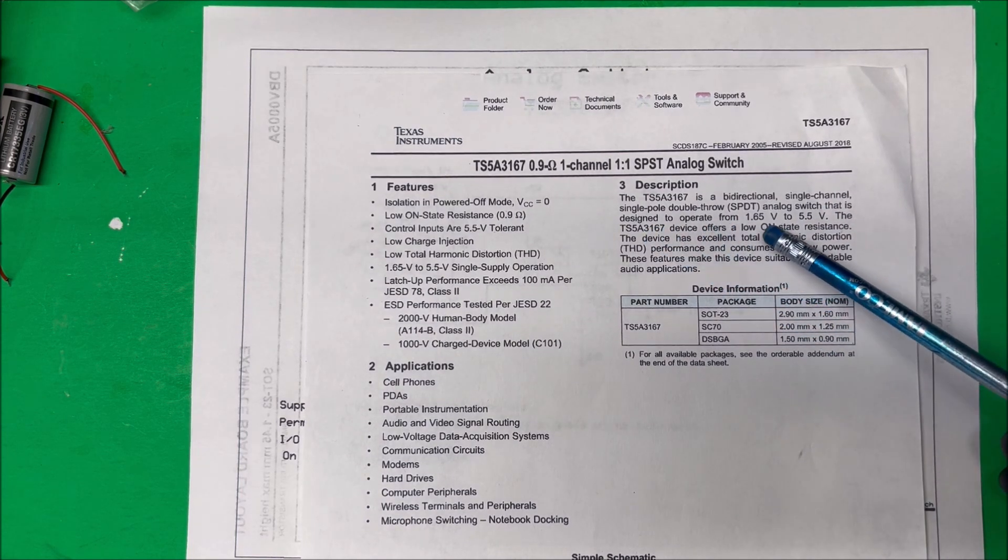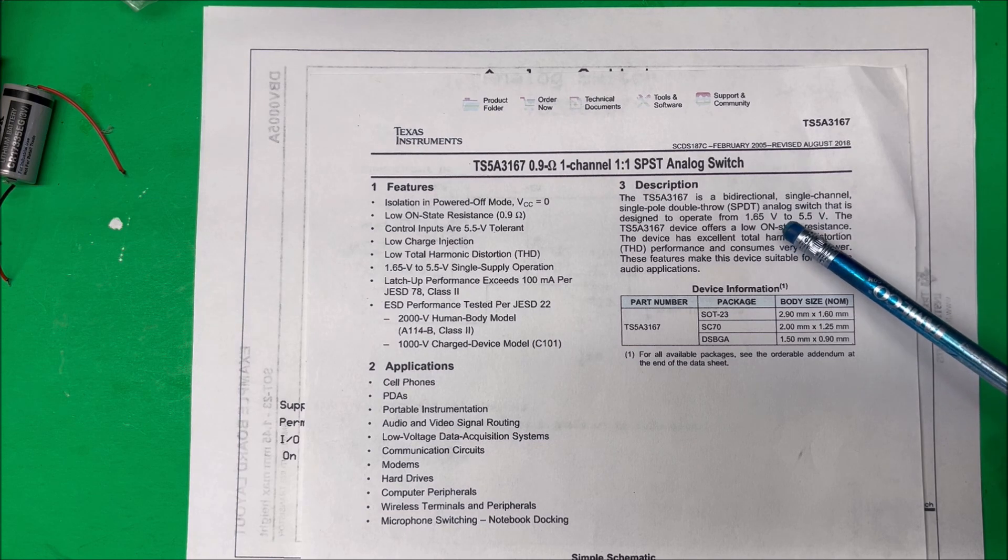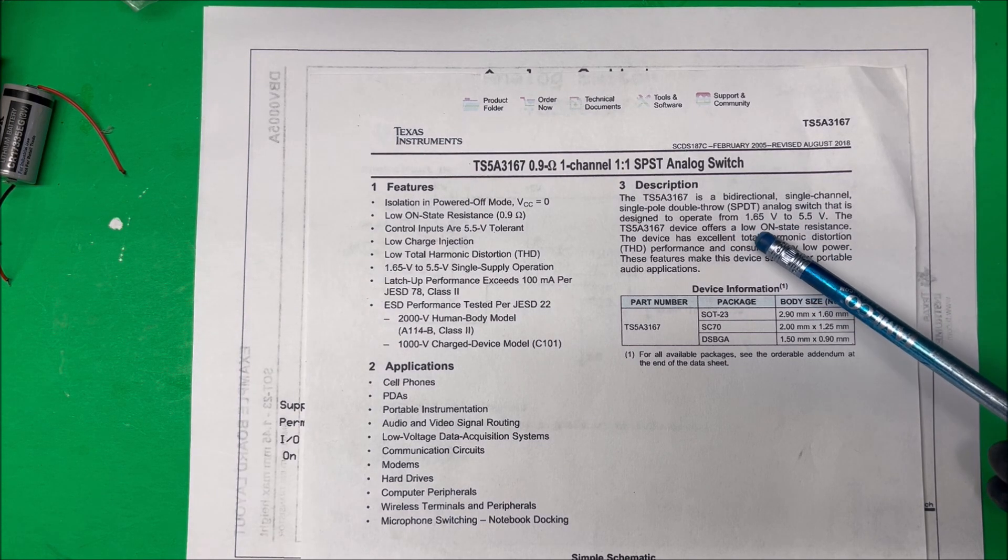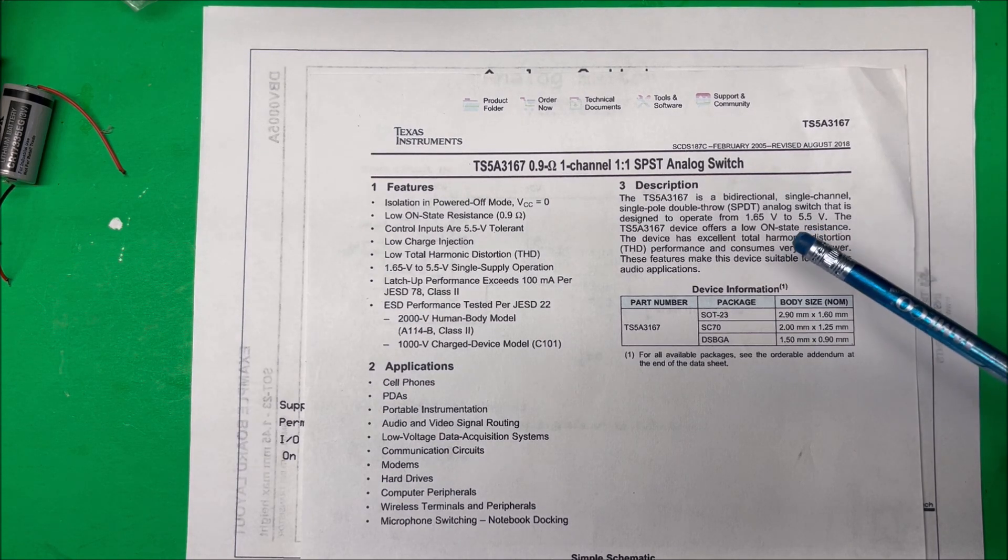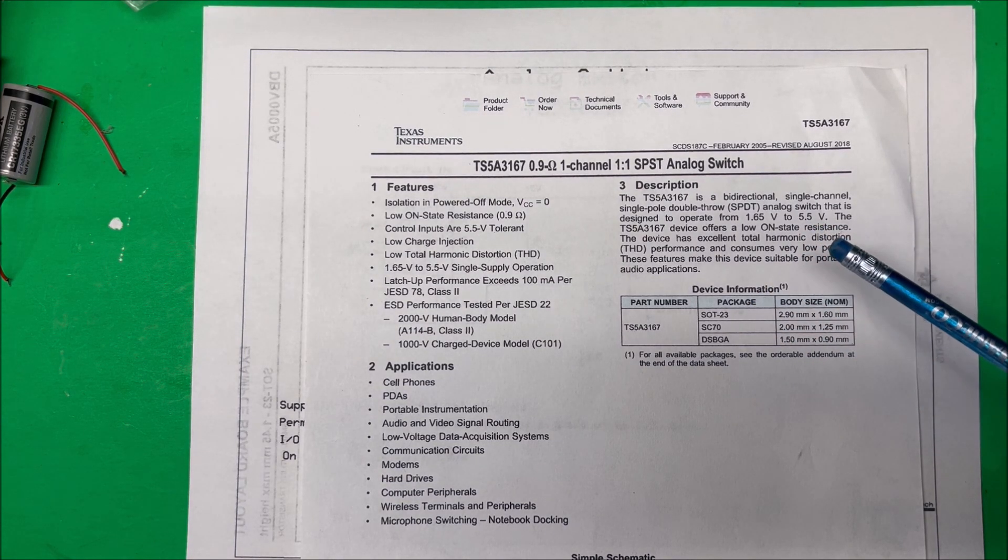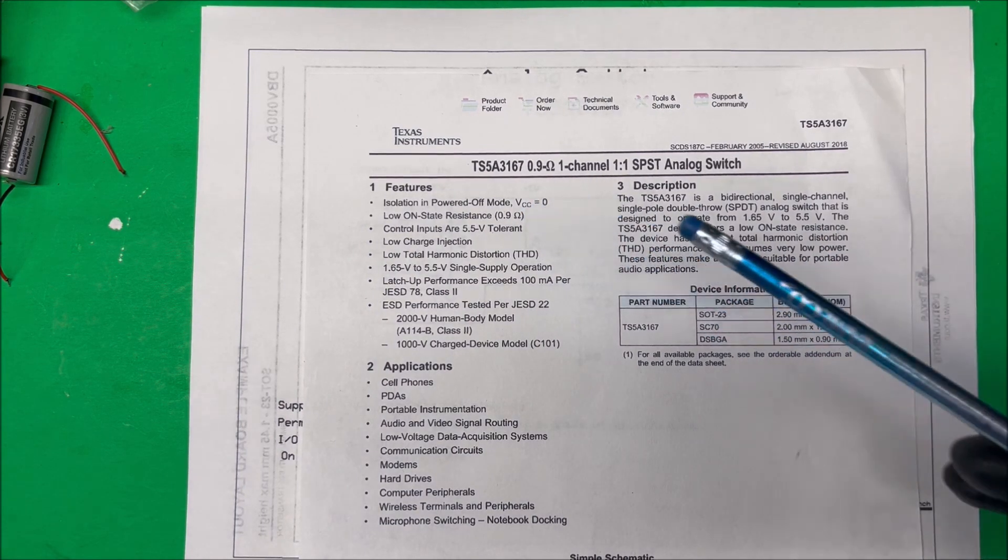It works in either direction and operates between 1.65 volts to 5.5 volts, same as the last one we looked at. But this one has an on-state resistance of 0.9 ohms, and the other one was about 5.5 ohms in the last video.